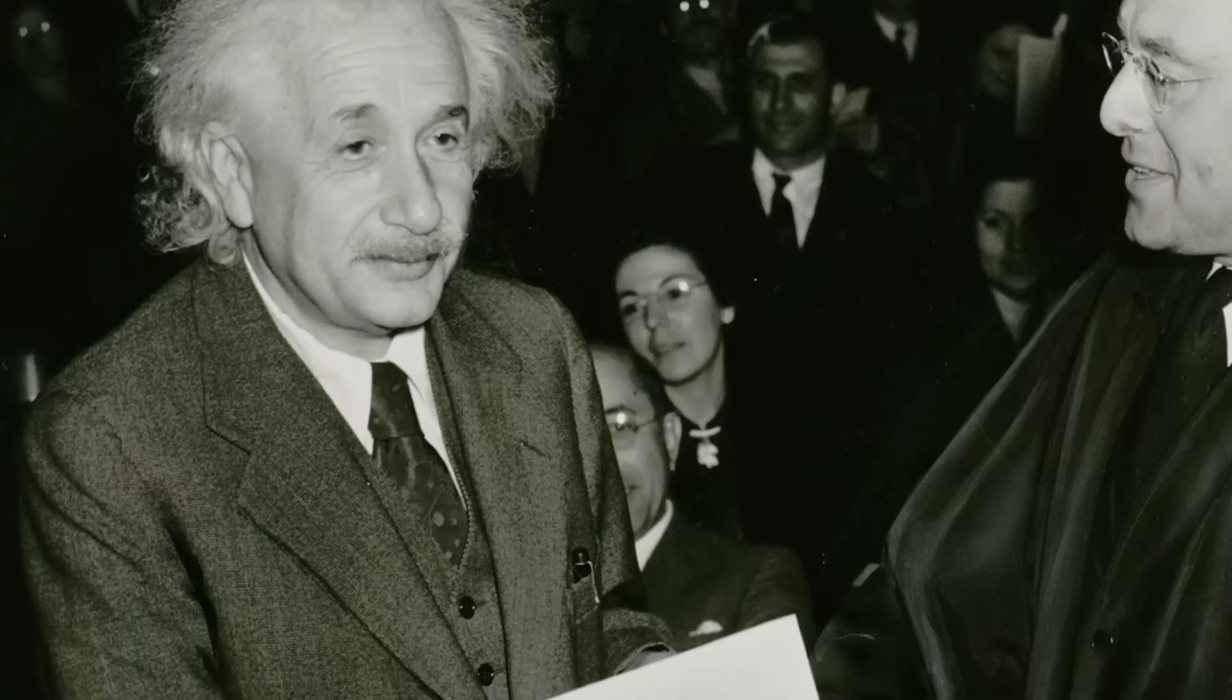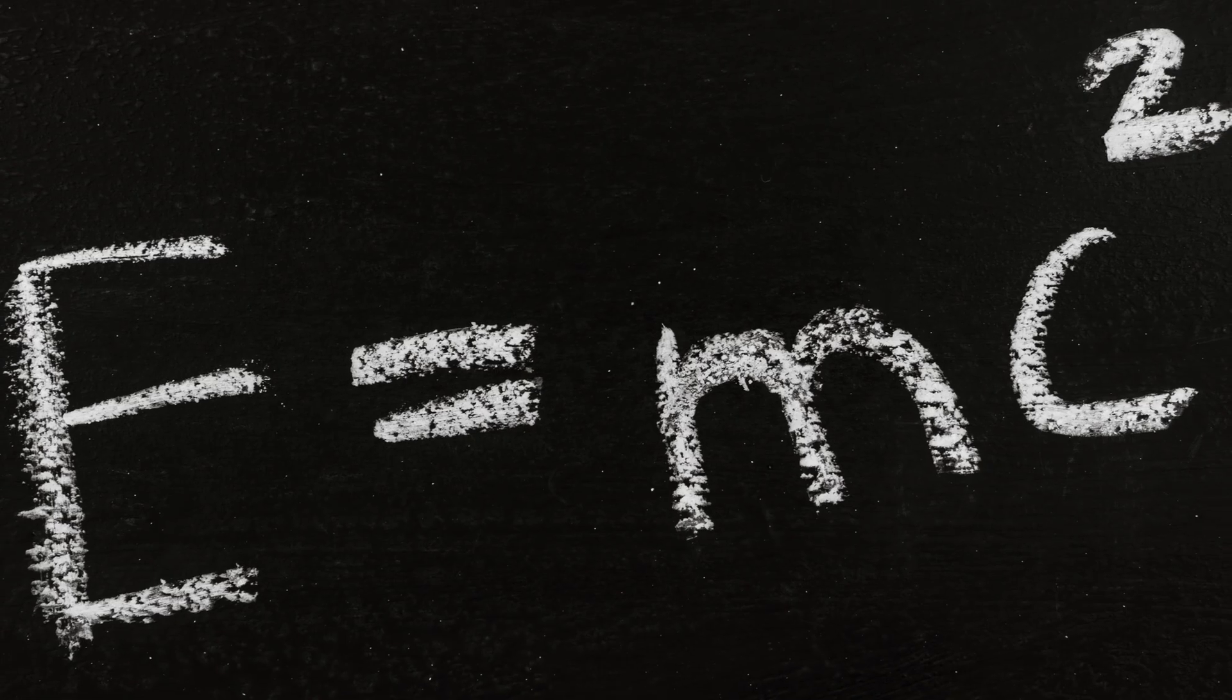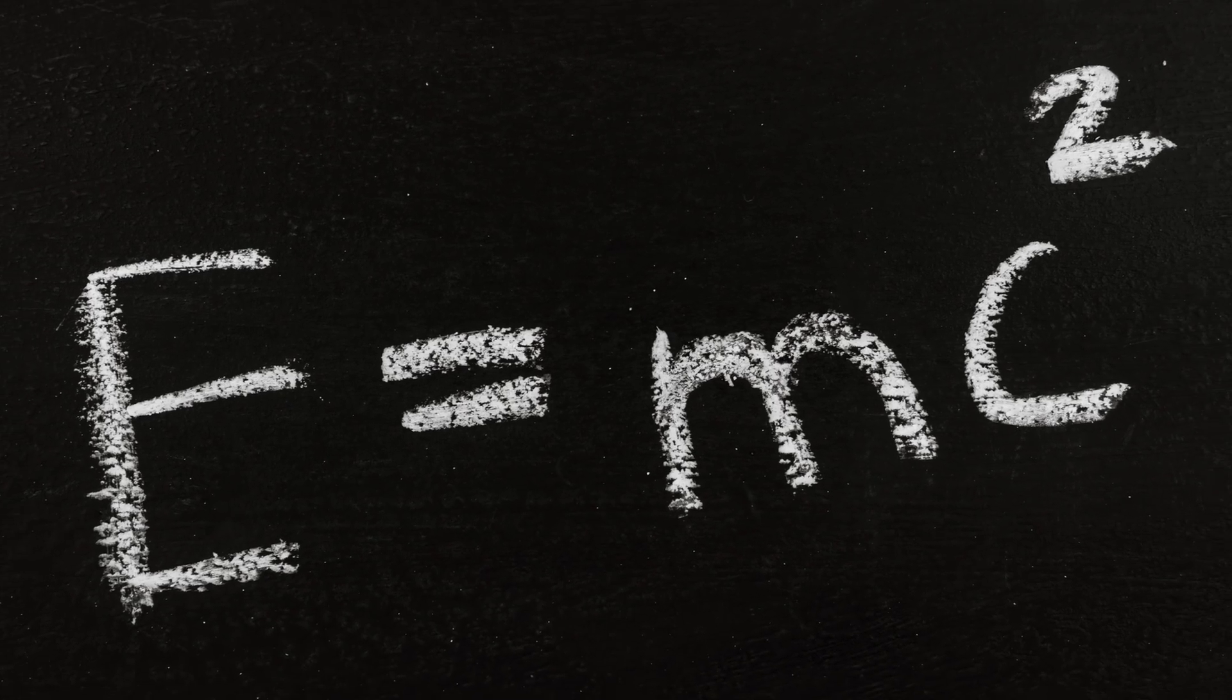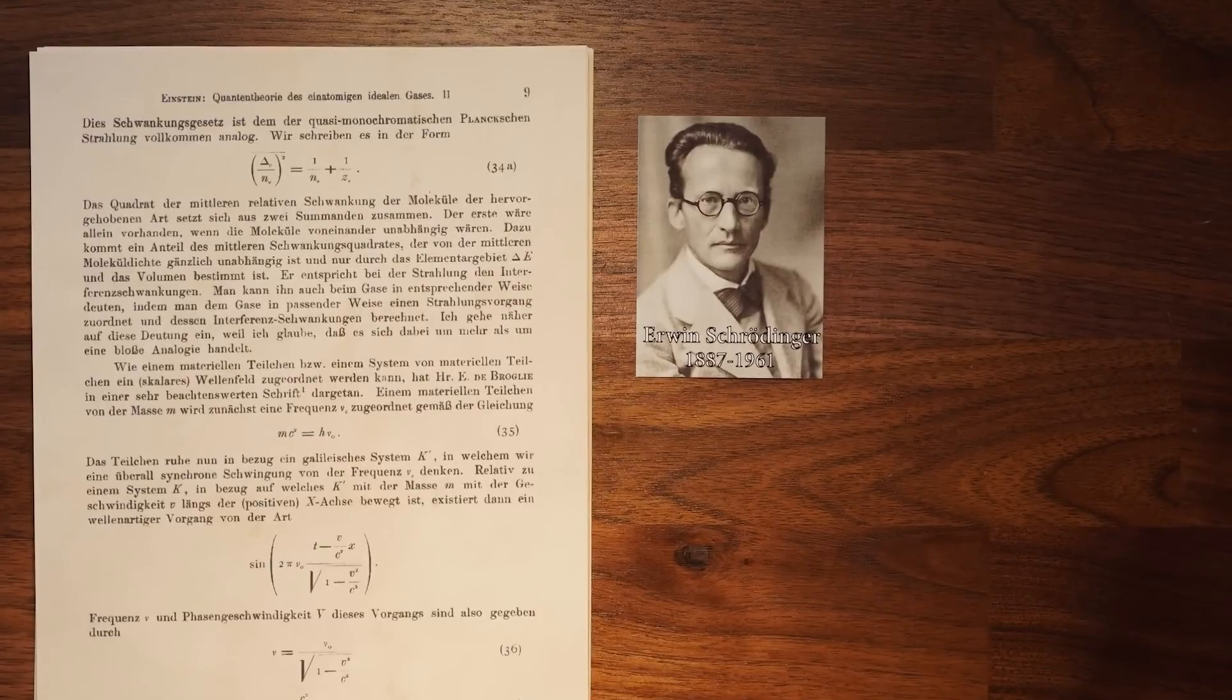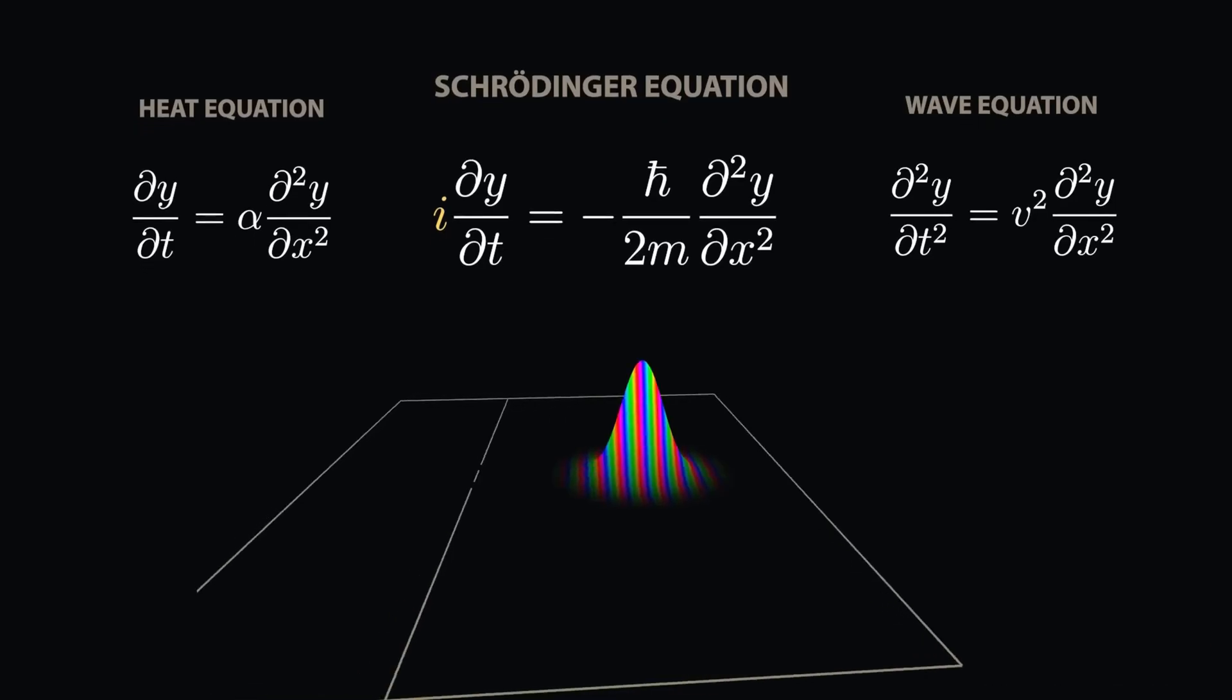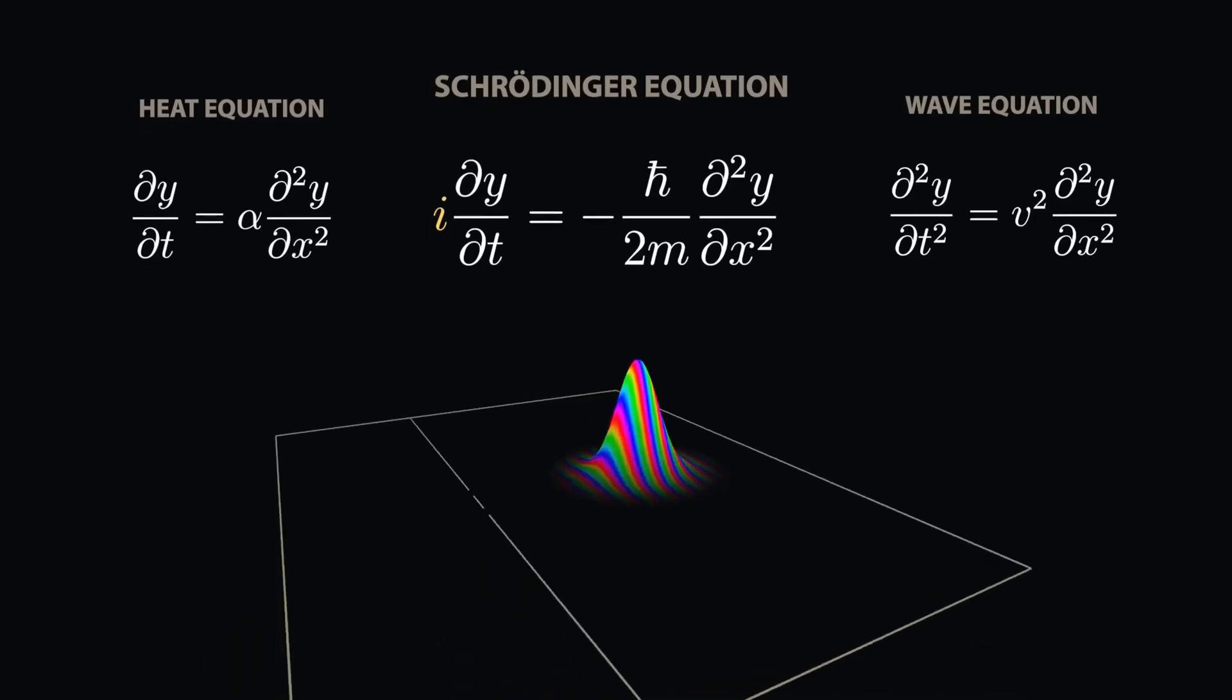Einstein spends years explaining the relationship between matter and energy, finds the formula of his relationship. Another genius, Erwin Schrödinger, discovered the atom position and energy of six particles. The famous Schrödinger about levels finds the equation.